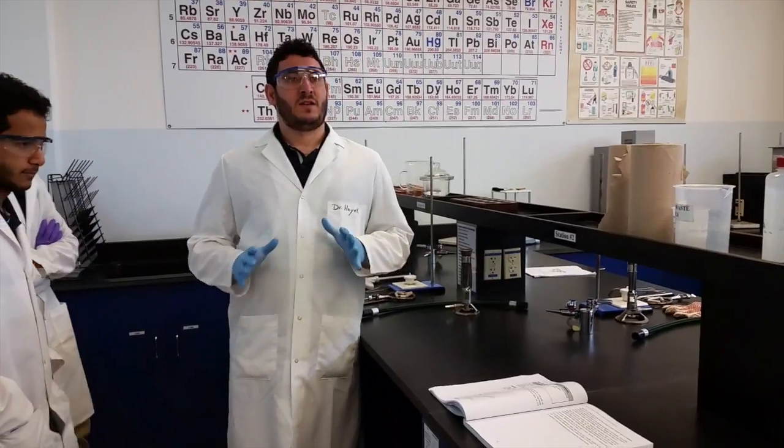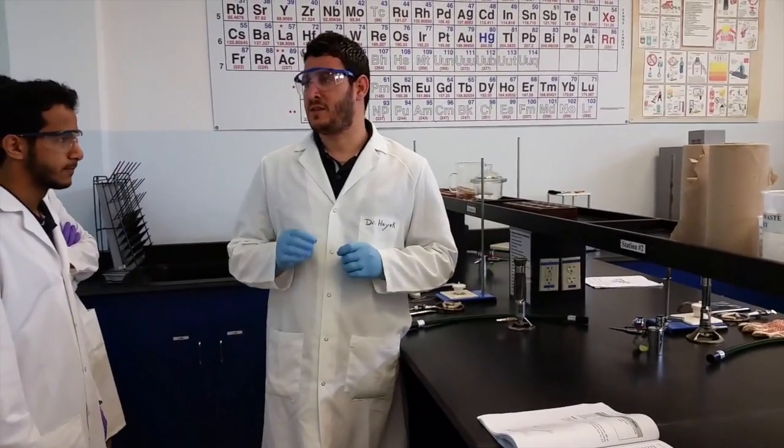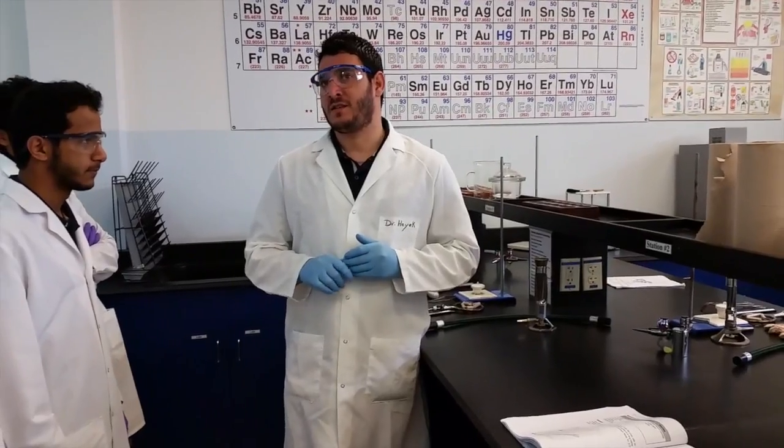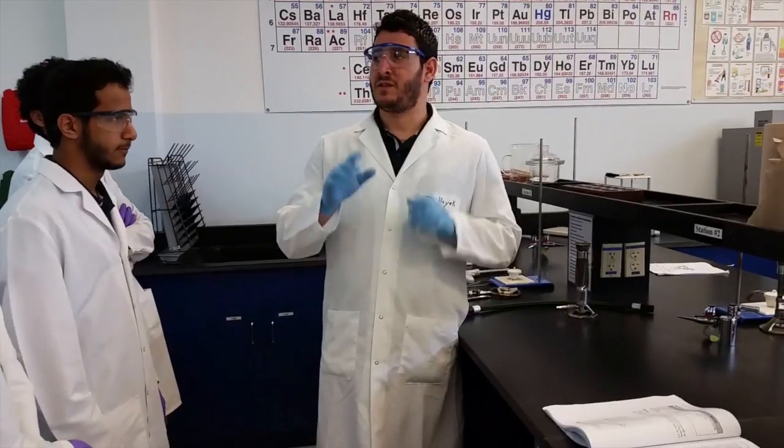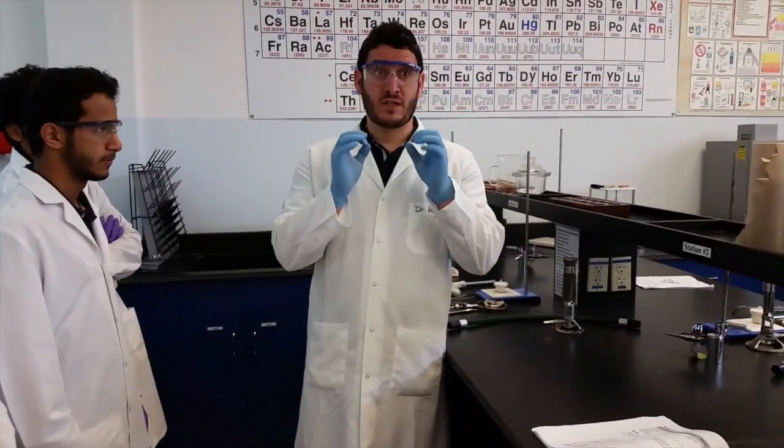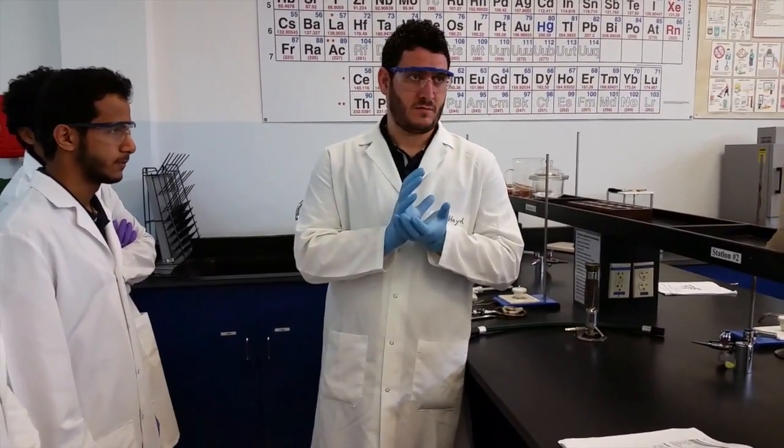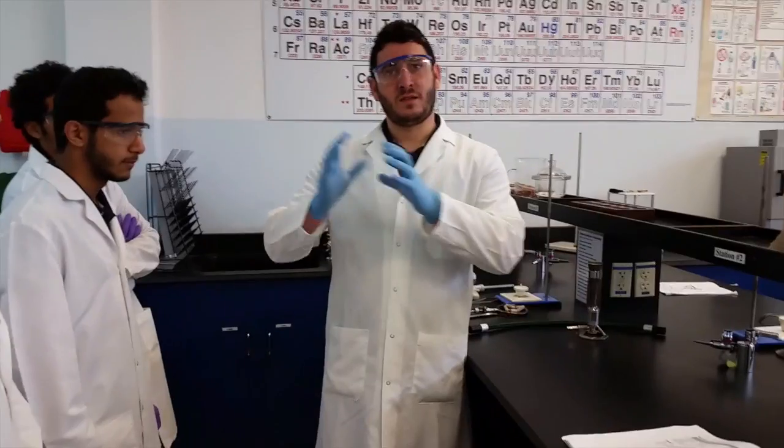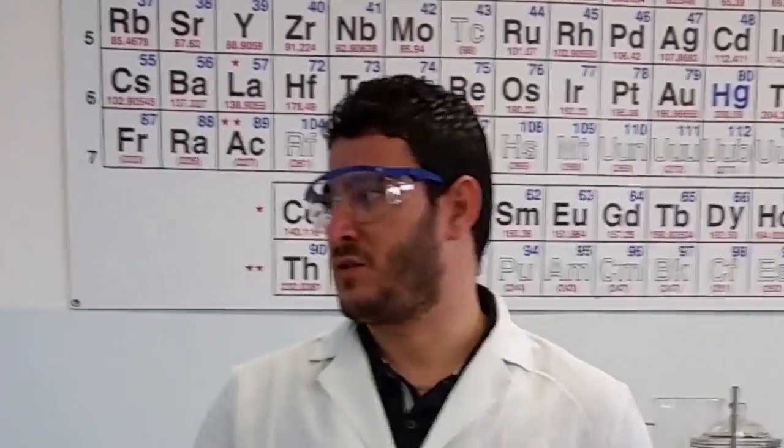Today's experiment we will determine the amount of water in a hydrate. A hydrate, as you have seen in chapter 2, is where you have the salt and water molecules - a certain number of water molecules surrounding the cation plus the anion. This is called a hydrate.